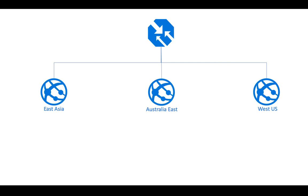With this Traffic Manager you want your clients to access the closest endpoints, so you would configure the performance traffic routing method for the Traffic Manager profile. This works perfectly — clients from East Asia get redirected to the East Asia web service, and clients in Australia East get redirected to the Australia East web service. Everything is good.